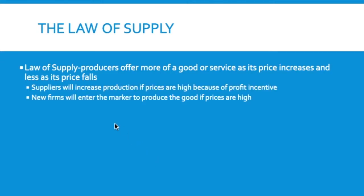This is partially because suppliers will increase production if prices are high because of profit incentive. New firms will also enter the market — if someone sees you producing something and making lots of money, they're going to say, 'I'm going to produce that also.' There's going to be two people producing it and naturally more product supply. These two things help lead to the law of supply.